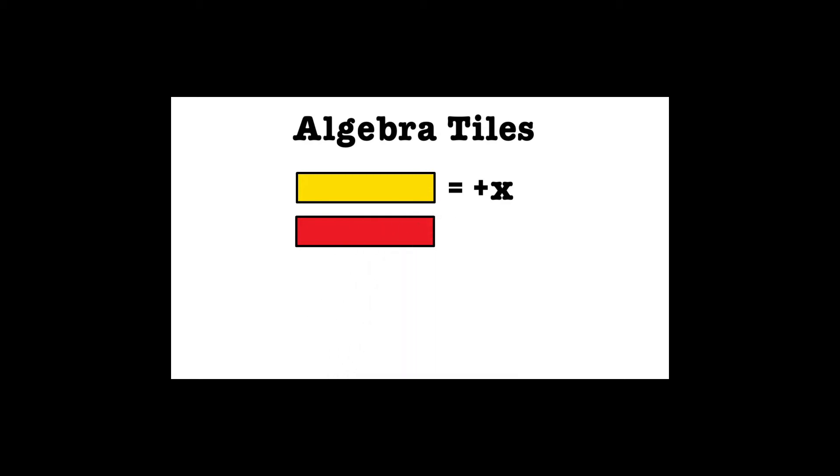If the rectangle is yellow, it represents a positive x. If it is red, it represents a negative x.